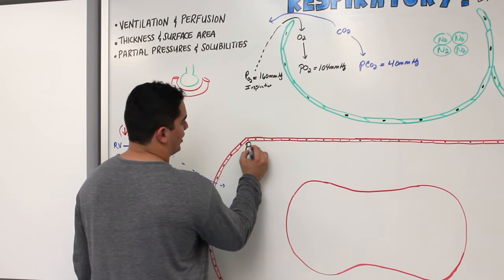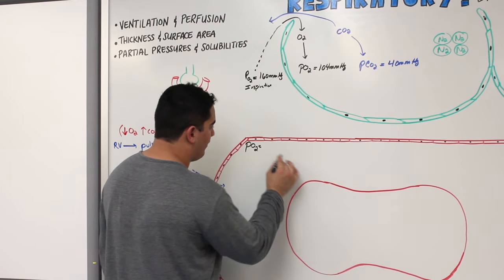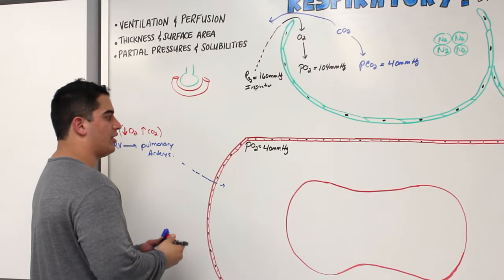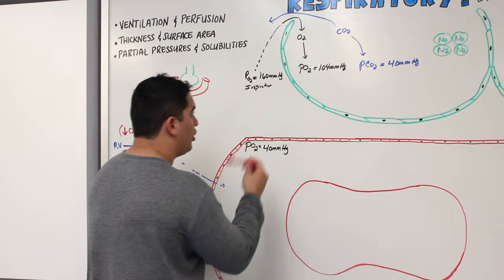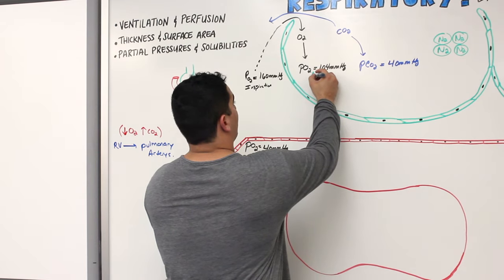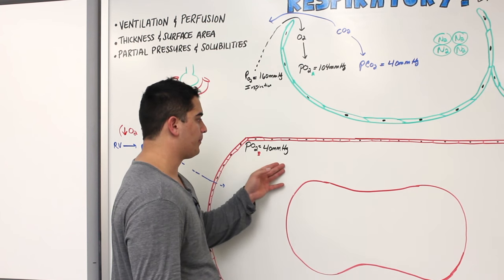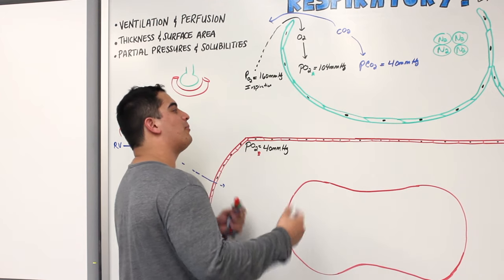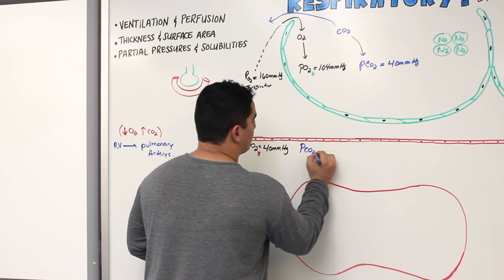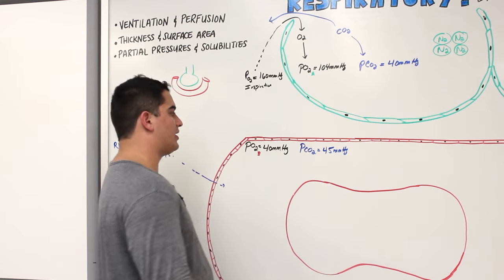In resting tissues, the partial pressure of oxygen in the blood is about 40 mmHg. The partial pressure of CO2 in the blood is about 45 to 46 mmHg. So we have alveolar PO2 of 104 mmHg versus blood PO2 of 40 mmHg, and alveolar PCO2 of 40 mmHg versus blood PCO2 of 45 mmHg.